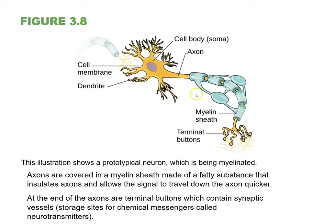The axon is covered with something called myelin, which creates this myelin sheath — it's a series of fatty tissue wrappings. It's kind of like insulation on an electrical wire. It helps with transmission and speeds up the process of transmitting a signal from one neuron to the next, which is a really good thing.